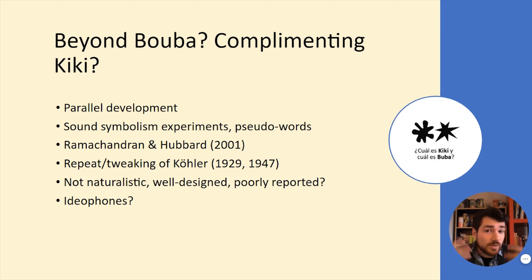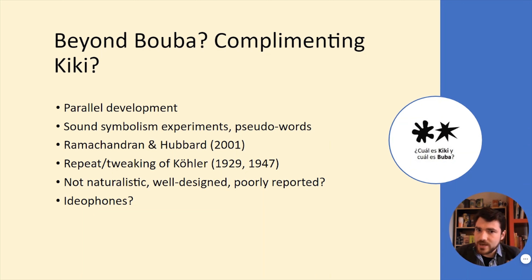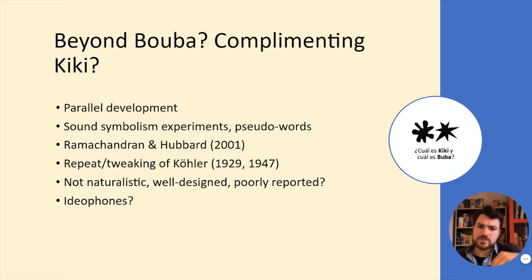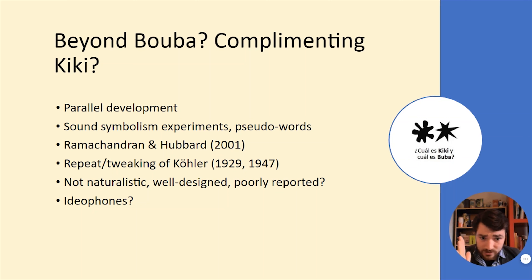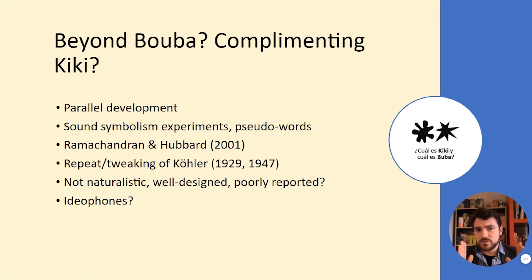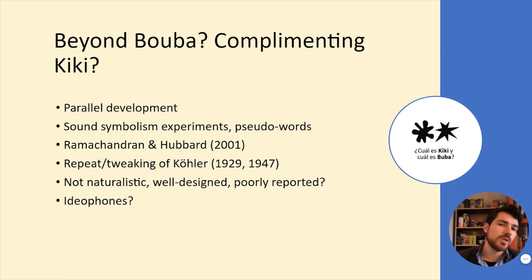Ramachandran and Hubbard link this to synesthesia, arguing that neurologically what's happening is similar to the actual linking of senses in the brain, and that we all have sprinklings of this. The original Kohler paper didn't go into this, but it — along with its later iterations — set up the idea that you can test this in a lab. Of course, these are not natural languages, not real words, and they don't interact with grammar. So parallel tracks emerged: linguistic description in the field and abstracted lab experiments, with a bridge that later faded away.